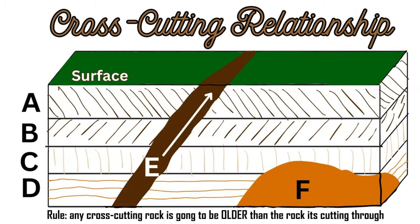Now if we add two extra rock layers E and F to our diagram, this relates to cross-cutting relationships that Steno mentioned in 1669. The rule is that anything that protrudes or goes through a rock must be younger than the rock it's going through. For example, rocks A, B, C, and D must have been existing and present before rock E was able to protrude through them up towards the surface.